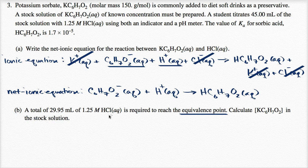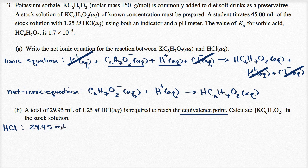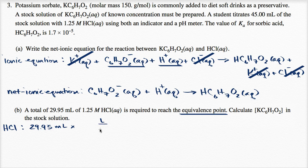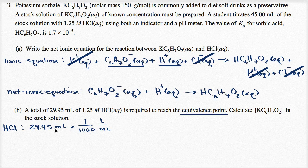Let's think about how many moles of hydrochloric acid this is. So I'll just write HCl. We have 29.95 milliliters, and let's convert it into liters, because if our concentration is given in terms of molarity — moles per liter — we need to get our units right. So we multiply by liters over milliliters: one liter equals 1,000 milliliters, so if you want to go from milliliters to liters, you divide by 1,000.